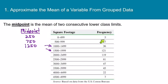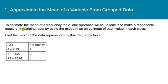This first class contains five values. We have no idea what they were, but if we have to guess at those five values, the best guess we can make is to put down 250 for each one of them. So to estimate the mean of a frequency table, we can make a reasonable guess at the original data by using the midpoint as an estimate of each value in each class.